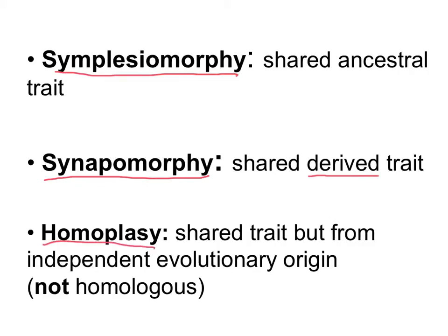Lastly we have homoplasy, and this is a trait that is not inherited by evolutionary descent. So it's not inherited from a common ancestor; instead it's a trait that evolved separate times. Do not confuse this with homologous — it's actually the opposite. This would be an analogous trait.